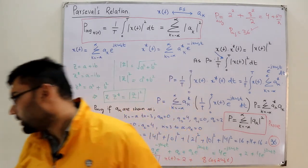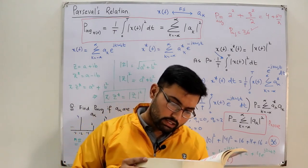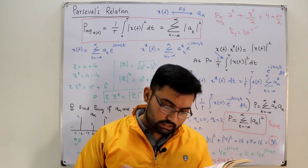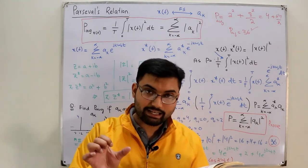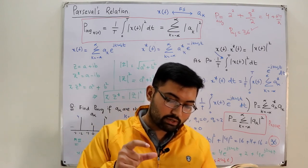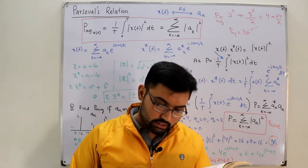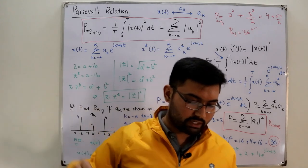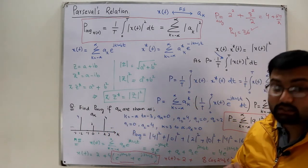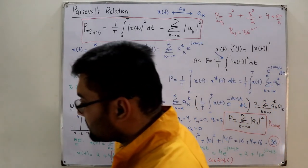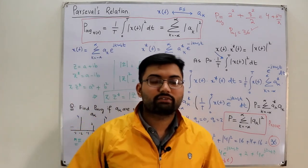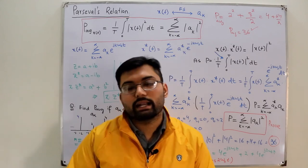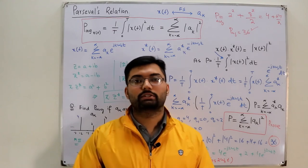The total average power in a periodic signal equals the average power in all of its harmonic components — that is the essence of Parseval's relation. That's it for this video, covering all the basics. In the next video we'll see some examples, and after that we'll move into the Discrete Time Fourier Series. Take care of yourselves and everyone around you. Do remember me in your prayers, and subscribe to the channel. Goodbye.